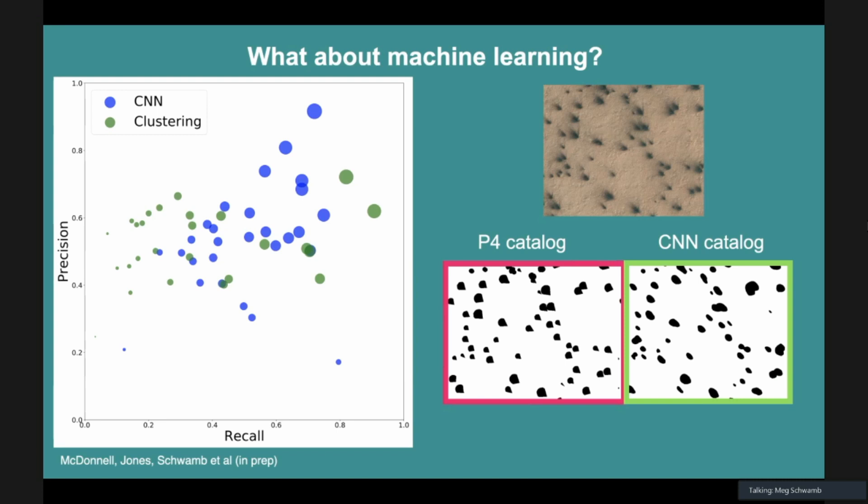What we're finding is that certain clustering techniques don't work. CNNs are okay, but what they've failed to do is actually get directionality. Every machine learning expert that we've worked with has failed to get directions of the fans and blotches. What they can do is find them. The best we've been able to do so far in a paper we just submitted to Icarus is have a CNN that can identify from the Planet 4 catalog being trained on it where the sources are.